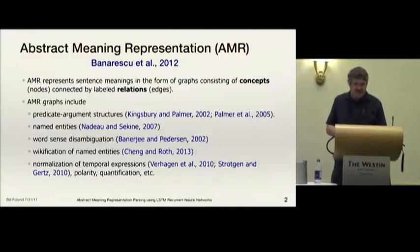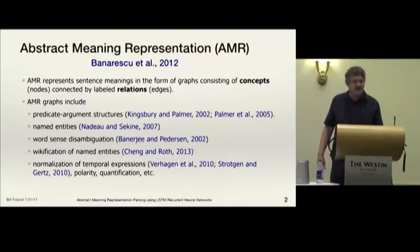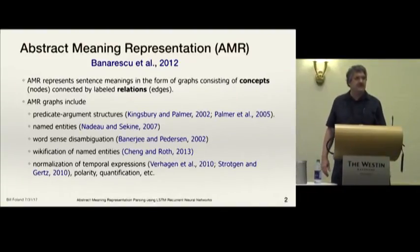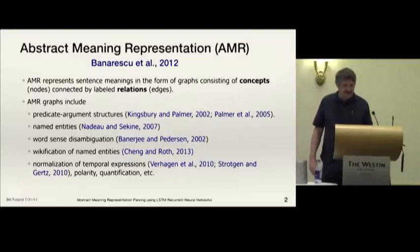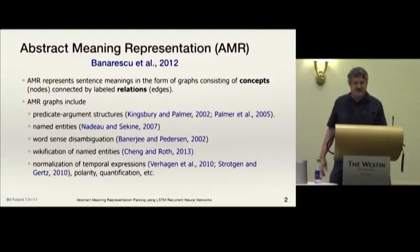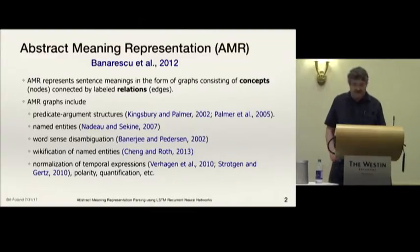AMR represents sentence meanings in the form of graphs. The nodes are concepts and the edges are relations. AMR graphs include predicate argument structures, named entities, word sense disambiguation, wikification of named entities, normalization of temporal expressions, polarity, quantification and other things.